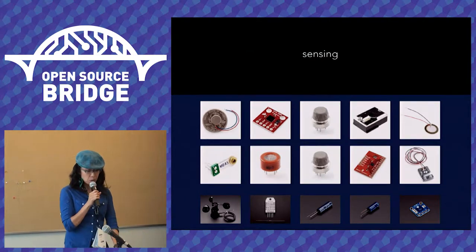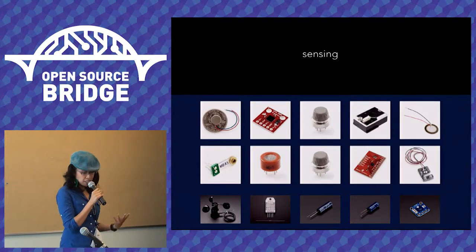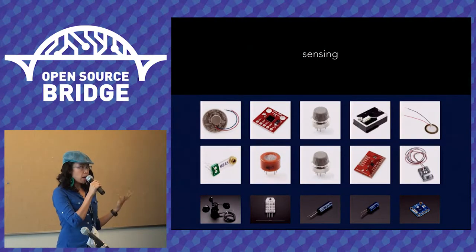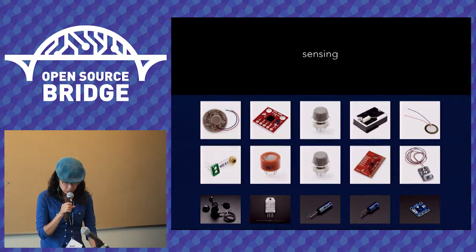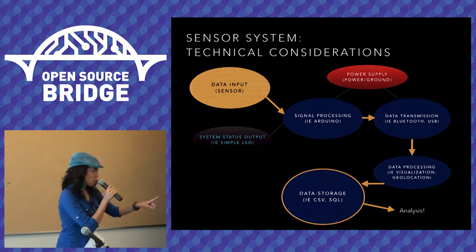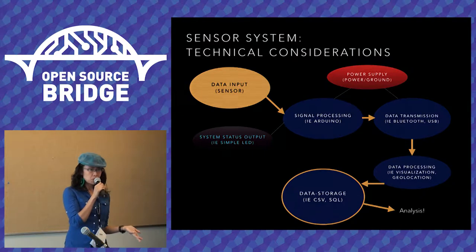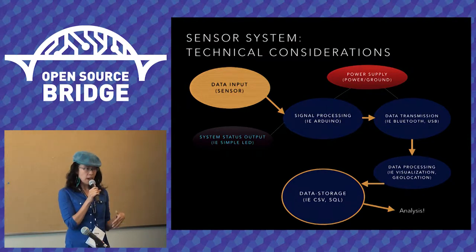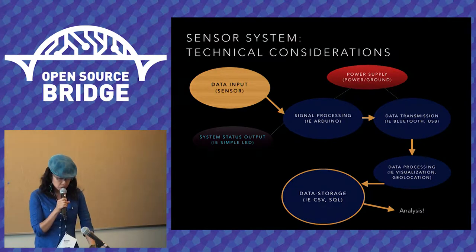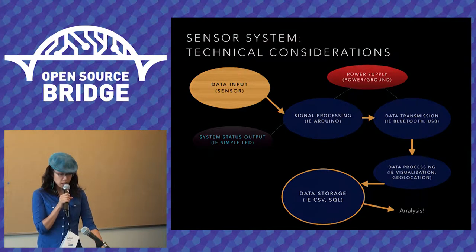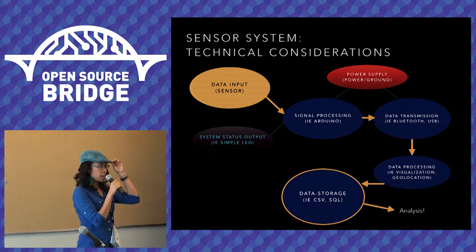These are some of the most commonly used sensors in the classes I teach, including biometric and environmental sensors. The sensors in the middle with screens are different kinds of gas sensors — for instance, carbon dioxide, methane, et cetera. We also use optical dust sensors, vibration and wind, pulse, brain sensors in some cases, and skin conductance.